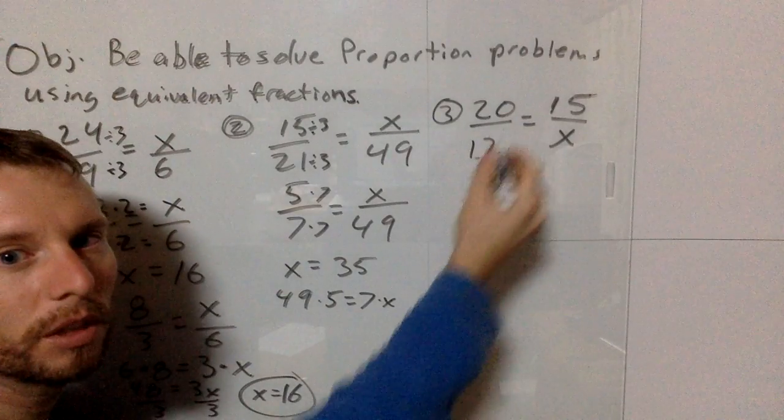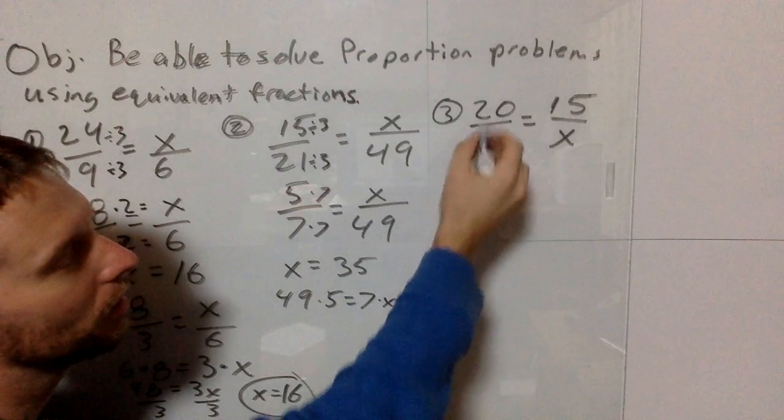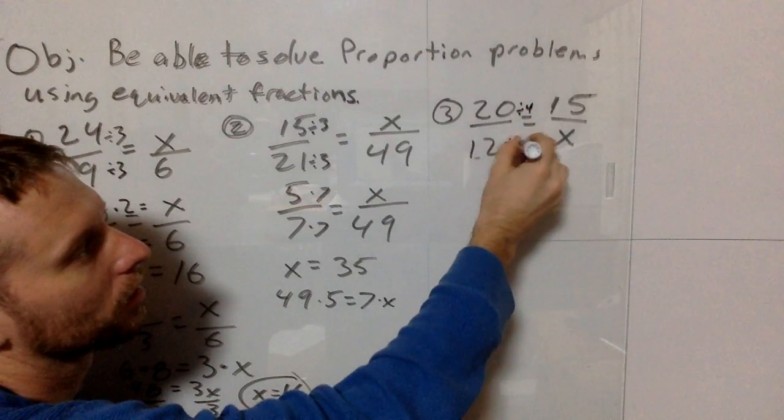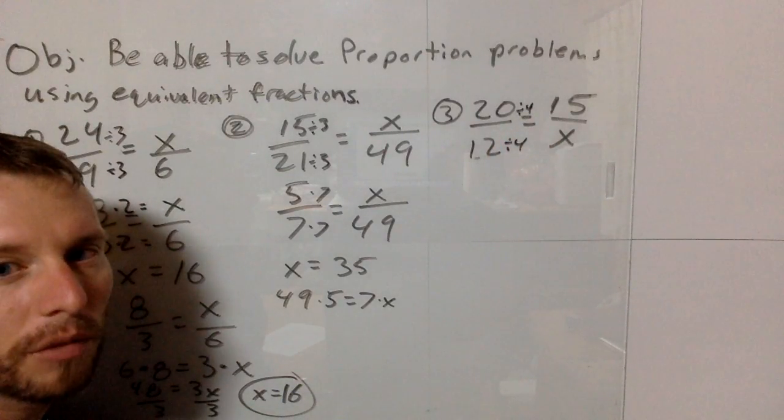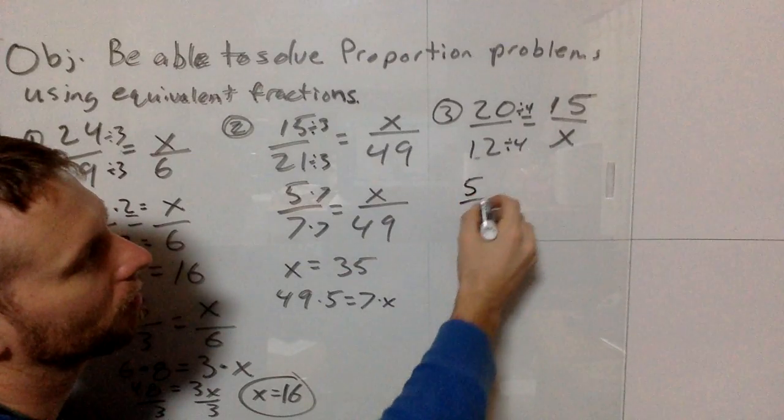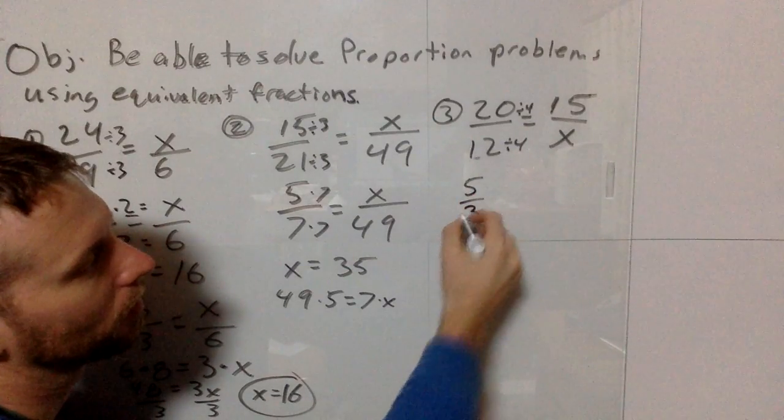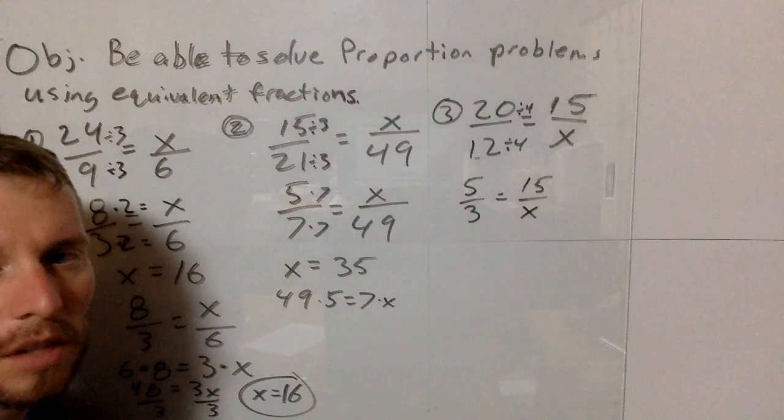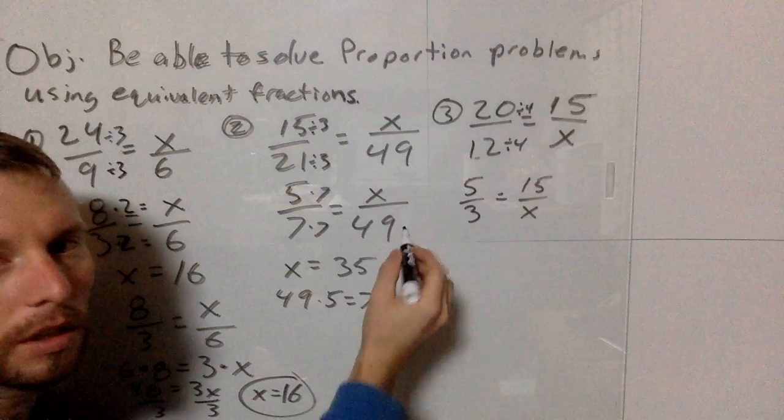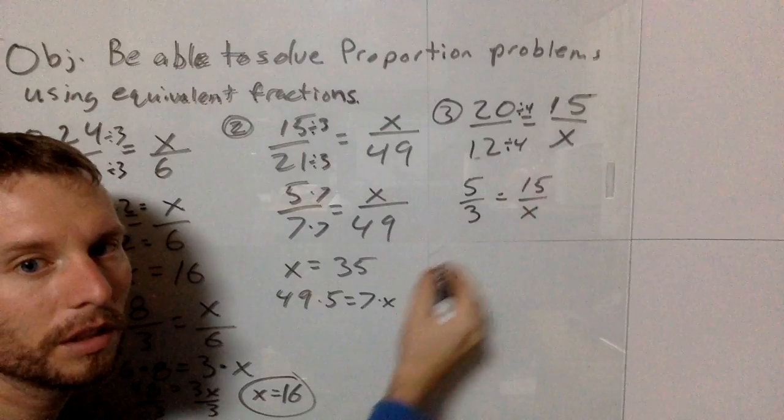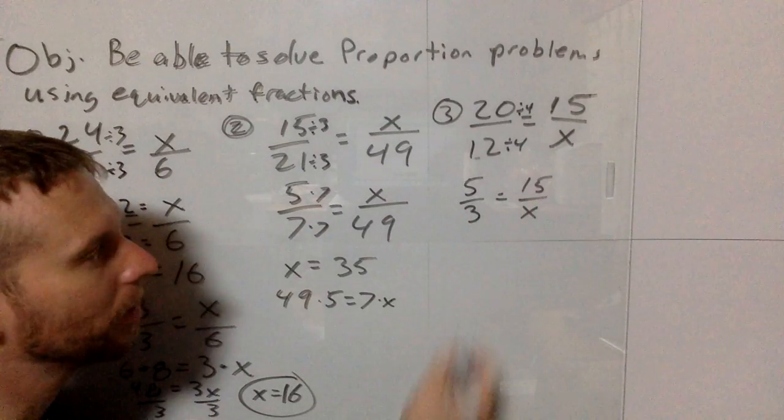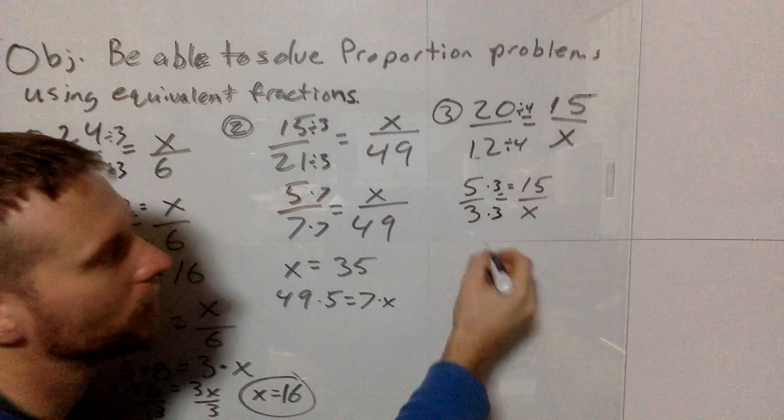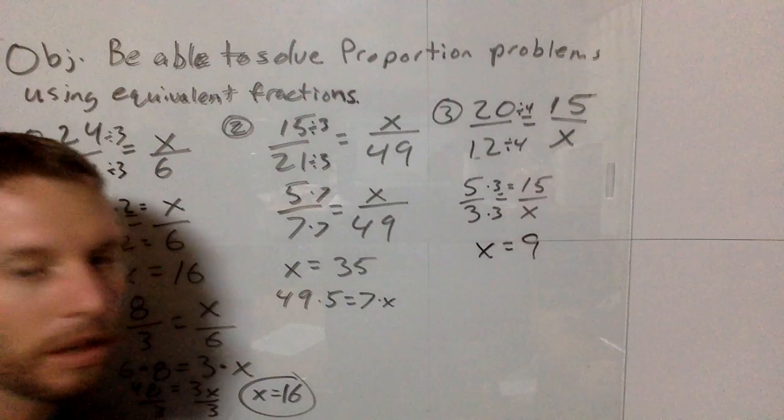Last one: 24 over 12 equals 15 over x. The greatest common factor is 4, so dividing top and bottom by 4 gives us 5 over 3 equals 15 over x. We could do cross products: 3 times 15 equals 45 equals 5 times x. Or we can see that 5 times 3 equals 15, so 3 times 3 equals 9. Therefore x equals 9.